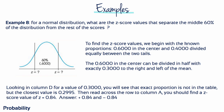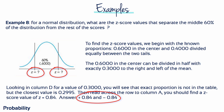Example 8: For a normal distribution, what are the z-score values that separate the middle 60% of the distribution from the rest of the scores? Start by making a sketch. We begin with the known proportions: 60% in the centre and 40% divided equally between the two tails. 60% as a decimal is 0.6, and the 0.6 in the centre can be divided in half, with exactly 0.3 to the right and left of the mean. Looking in column D for a value of 0.3, the closest value is 0.2995. Reading across to column A gives a z-score of 0.84. Our answer is plus 0.84 and minus 0.84 — these are the z-score values that separate the middle 60% of a distribution from the rest of the scores.